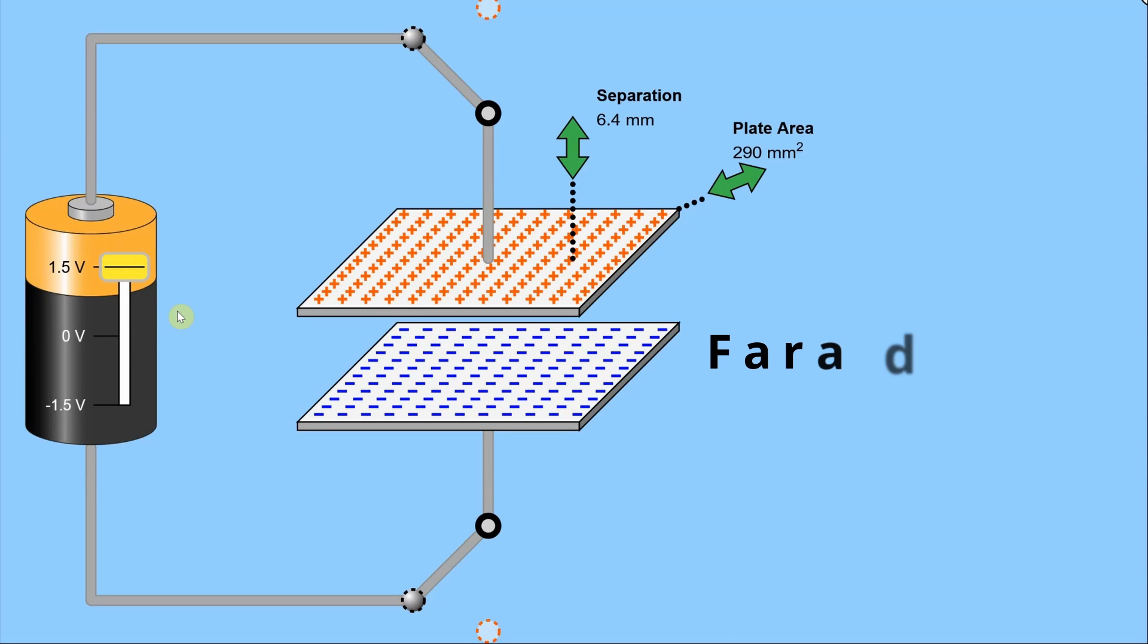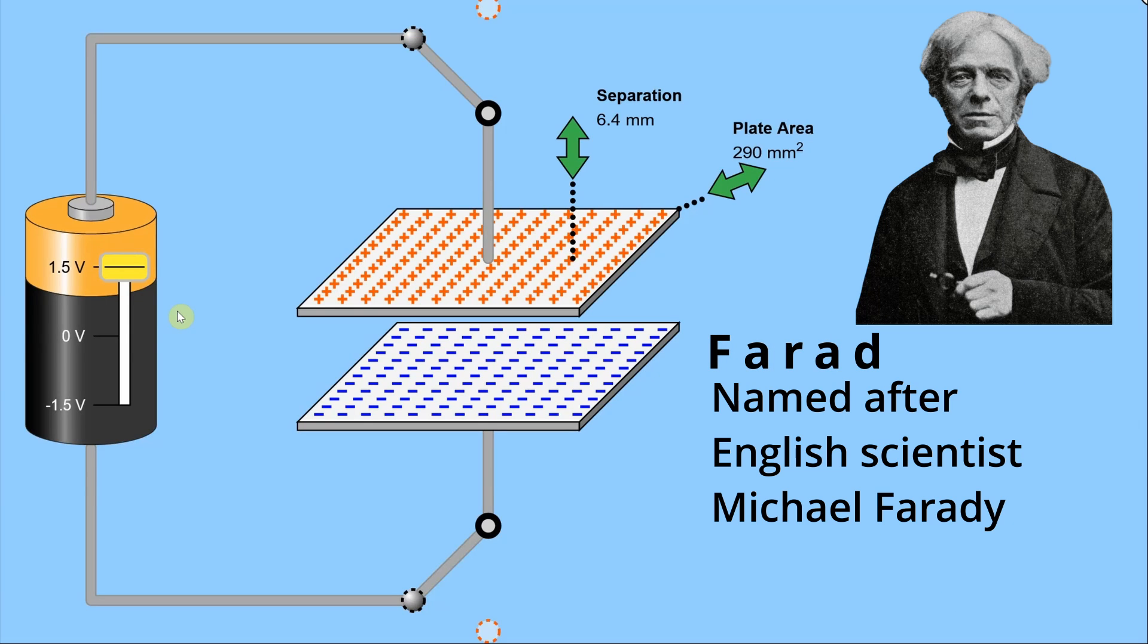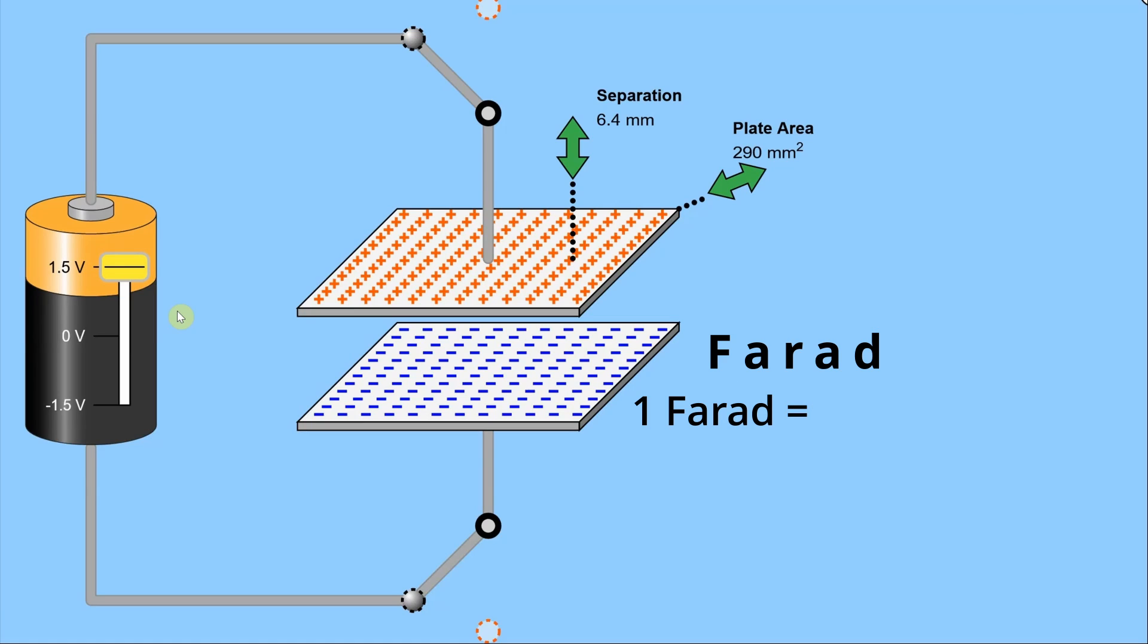The units of capacitance are farads. And a one-farad capacitor can store one coulomb of charge per volt applied to it. Now anytime you have conductors separated by an insulator, you will have a capacitance. That's what we just talked about. But a capacitor is a device that is specifically designed to have a certain amount of capacitance. Now let's think about what purpose these charge storage devices, these capacitors have.